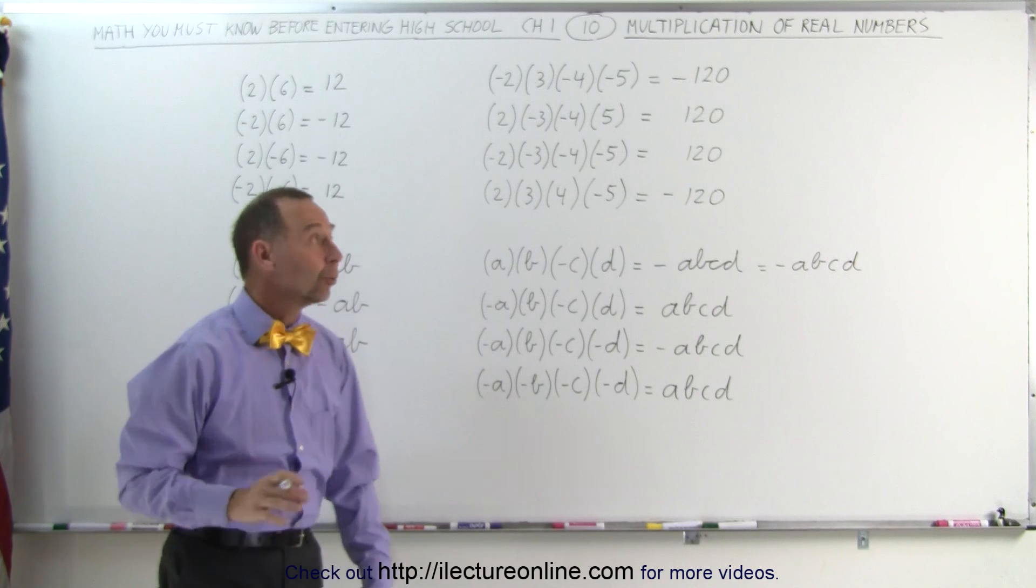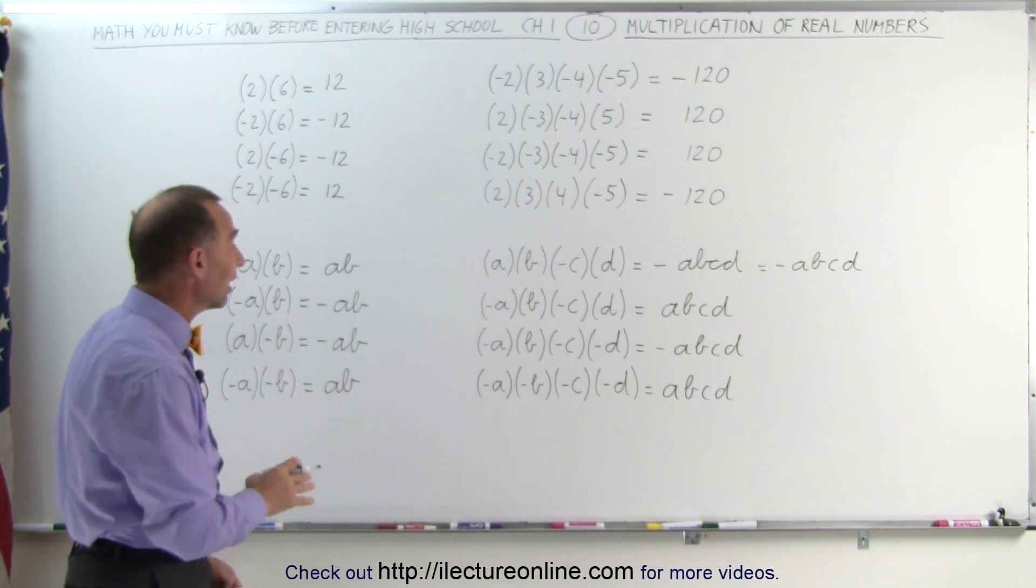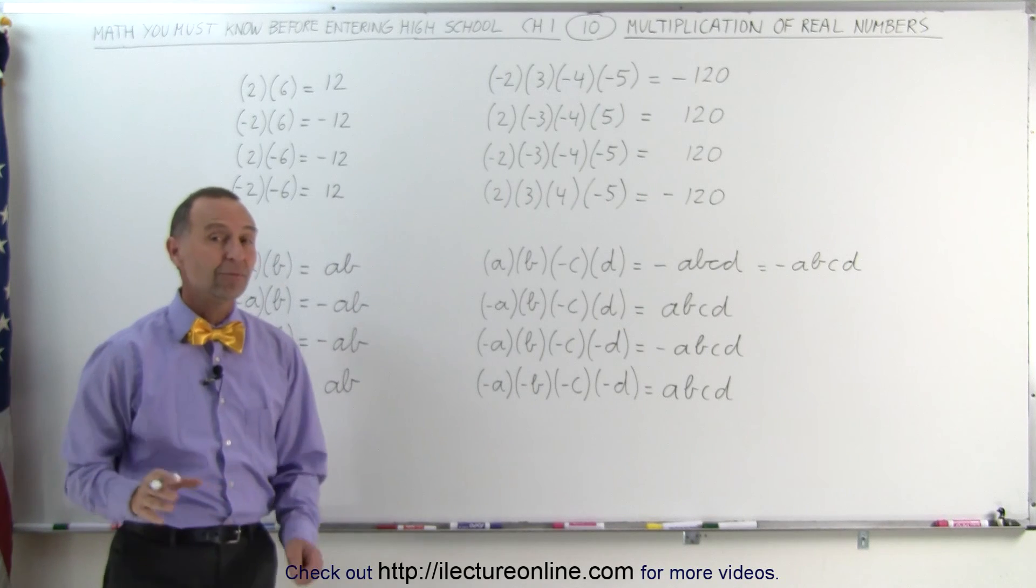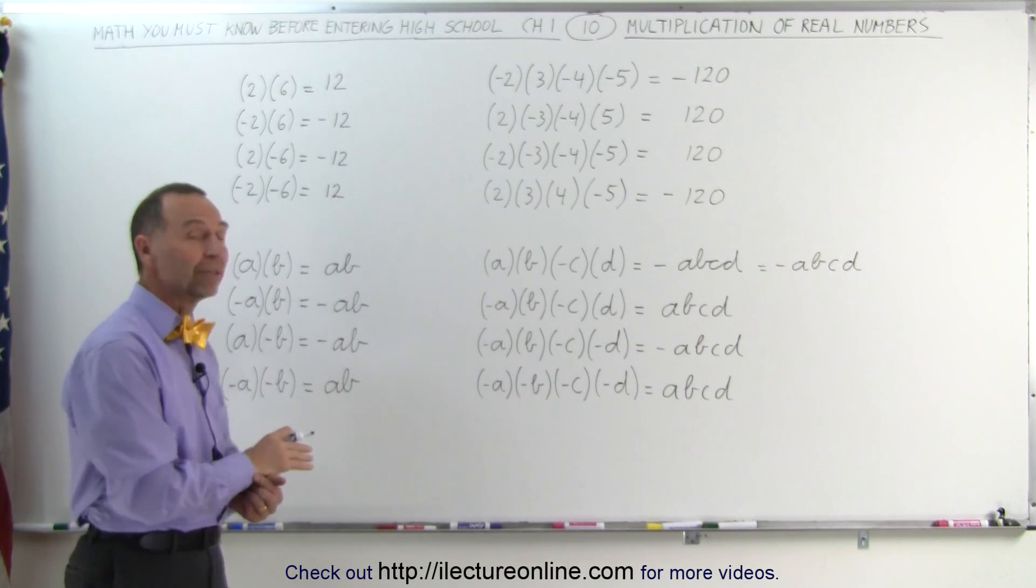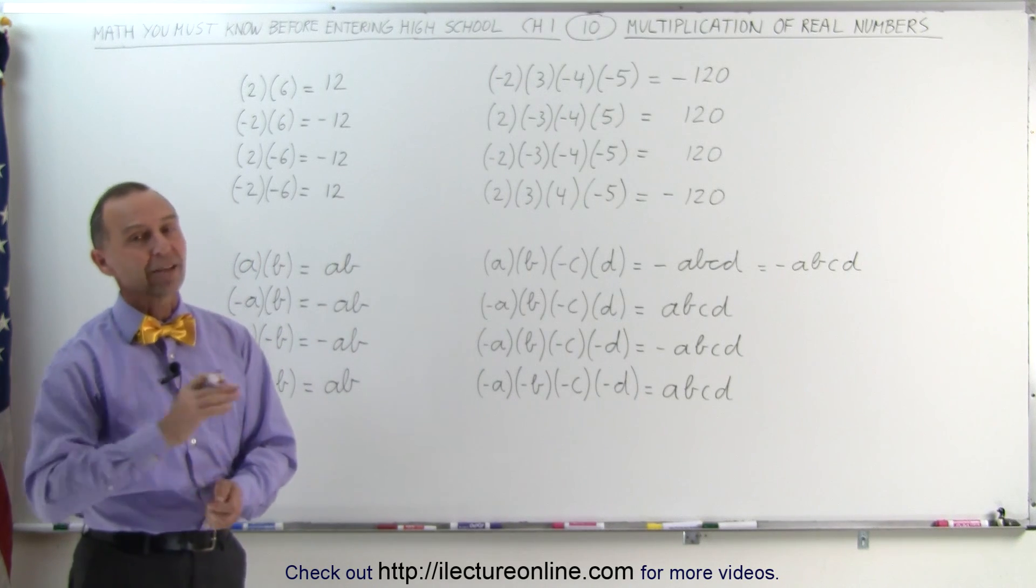And that's how we multiply real numbers. You can see that when there's signs involved, an odd number of negatives make the answer negative. An even number of negatives, when you're multiplying together, the answer is positive. And that's how it's done.